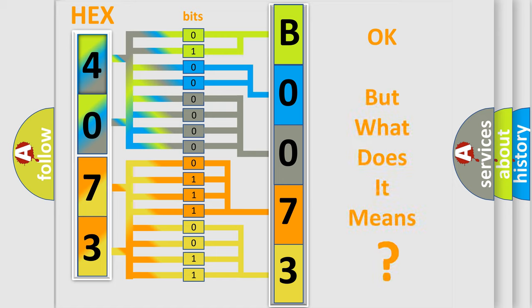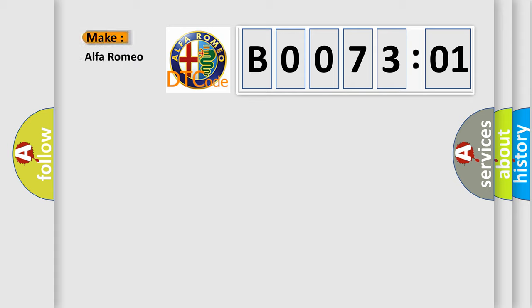The number itself does not make sense to us if we cannot assign information about what it actually expresses. So, what does the Diagnostic Trouble Code B007301 interpret specifically for Alfa Romeo car manufacturers?